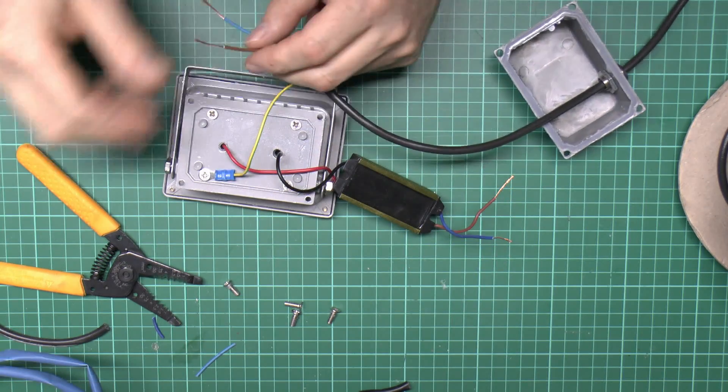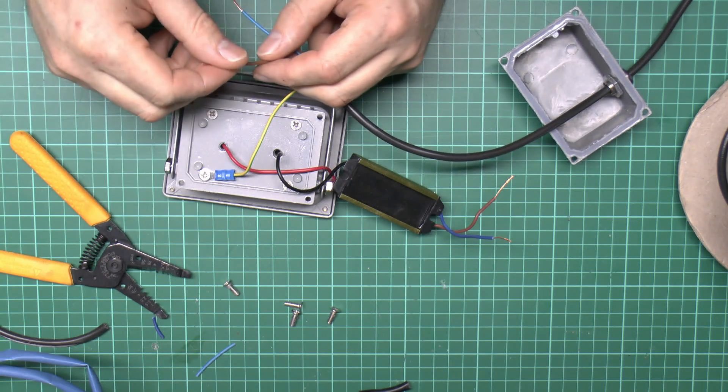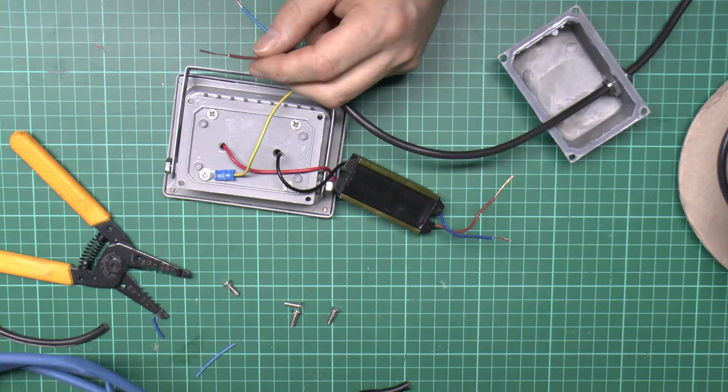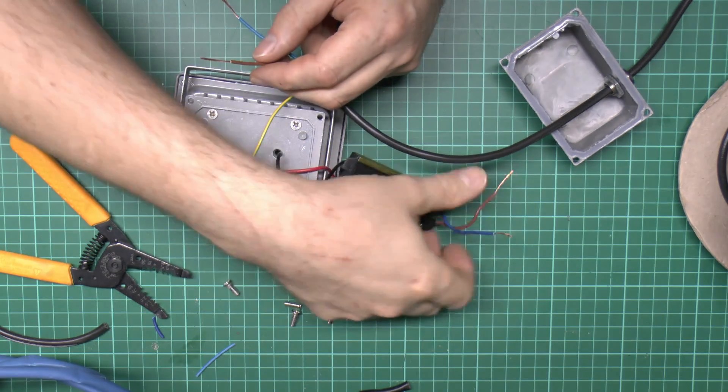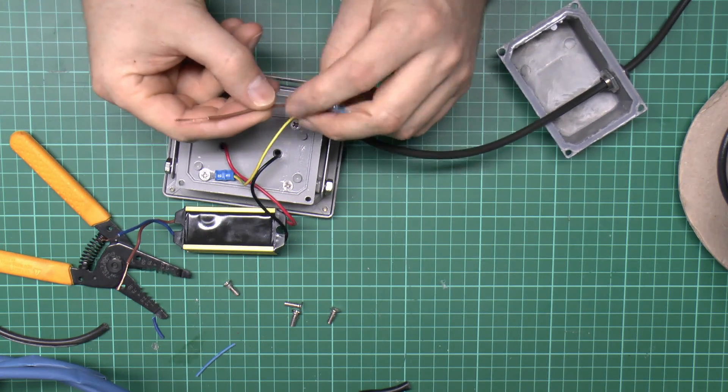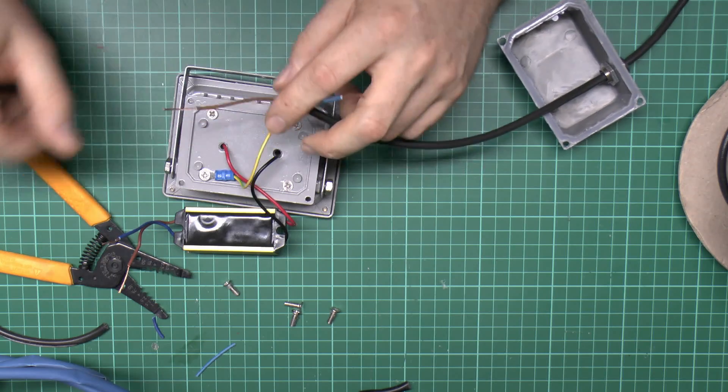To join these we could use various methods, crimps or screw terminals. But in this case we're going to solder these because that's far more reliable. Before soldering we need to put some insulation here so we can cover over the joint afterwards.